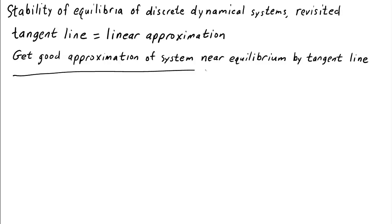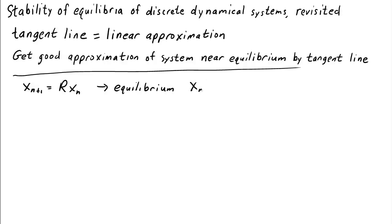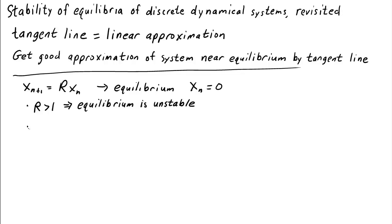So let's remind ourselves of the results using a linear system. If we had the dynamical system xn+1 equals r·xn — a nice simple linear system — we have one equilibrium at xn equals 0. We know how to determine whether this equilibrium is stable: if r is greater than 1, we get exponential growth and the equilibrium is unstable. No matter how close we start to 0, as long as we don't start at 0, we grow exponentially away. On the other hand, if r is between 0 and 1, the equilibrium is stable — we have exponential decay toward 0.